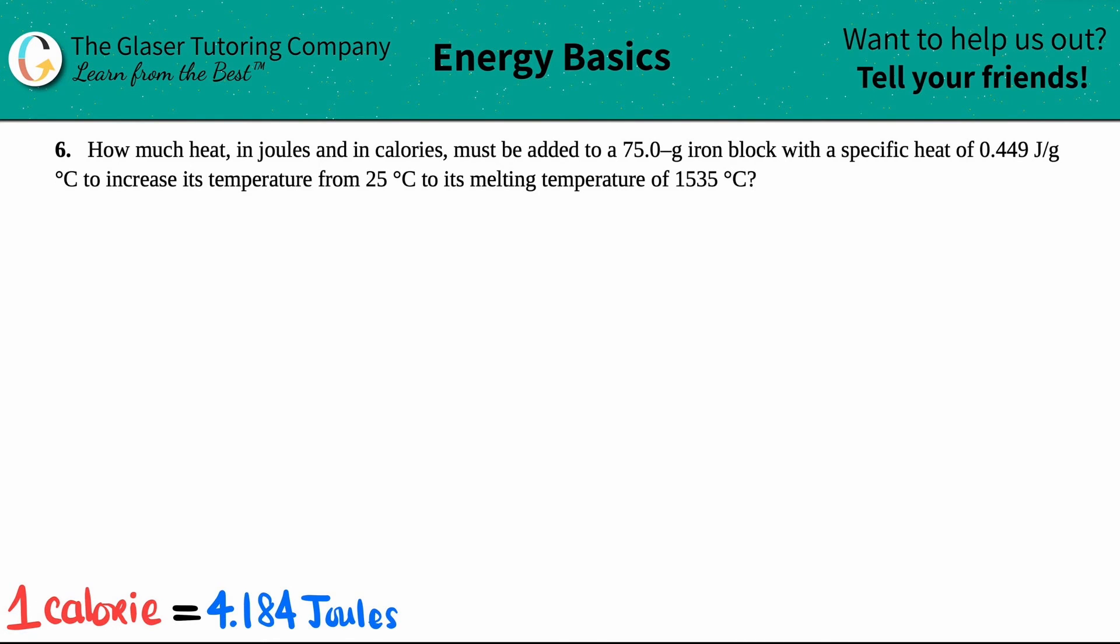Number six: How much heat in joules and in calories must be added to a 75.0 gram iron block with a specific heat of 0.449 joules per gram times celsius to increase its temperature from 25 degrees celsius to its melting temperature of 1535 degrees celsius? Okay, a lot of numbers here, right, and they're asking us for one thing - how much heat.